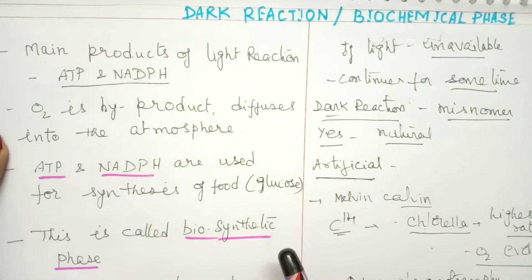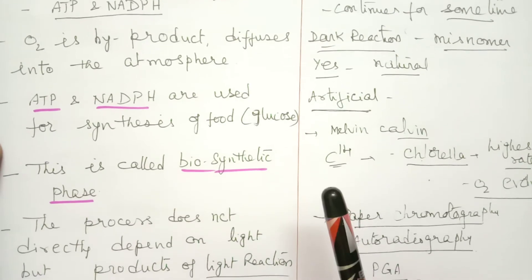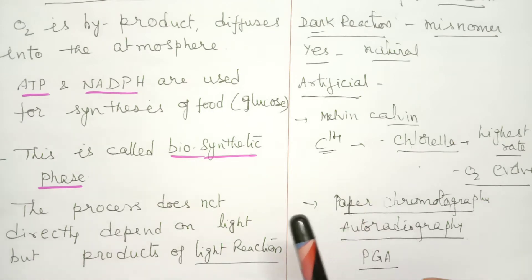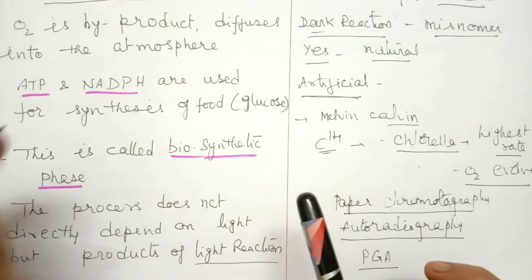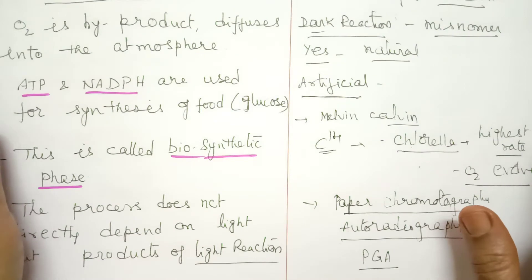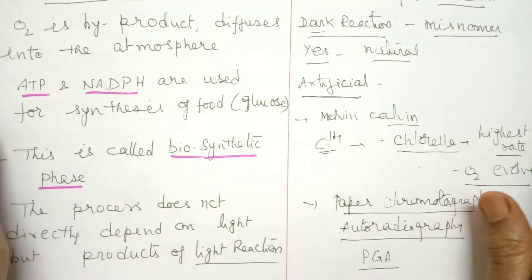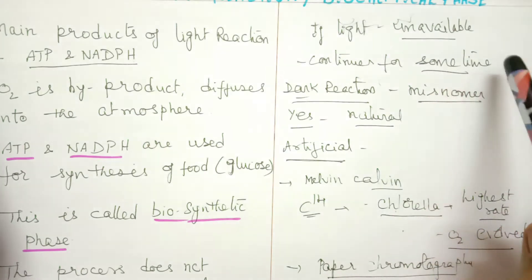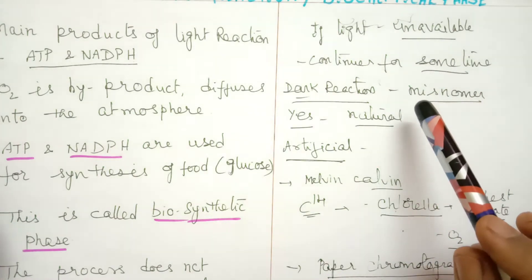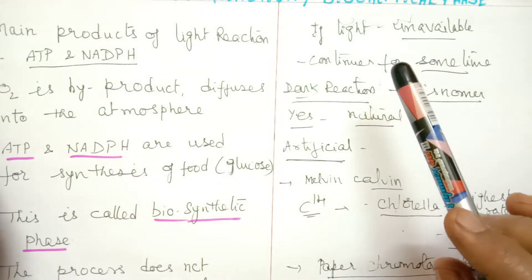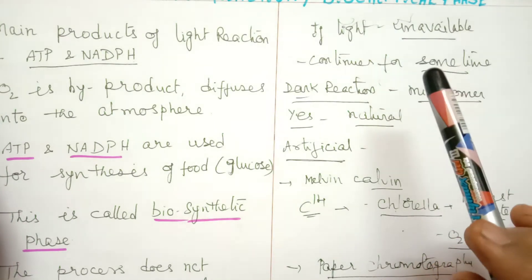This process does not directly depend upon light, but it depends upon the products of the light reaction. If light is unavailable, the dark reaction can continue for some time but will stop later. Once light is made available again, the reaction can proceed, because this reaction totally depends upon the products of the light reaction.